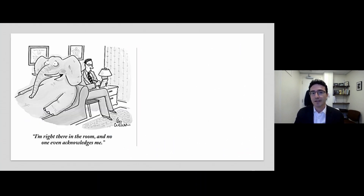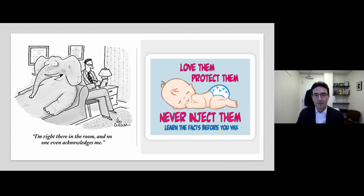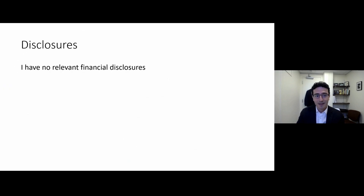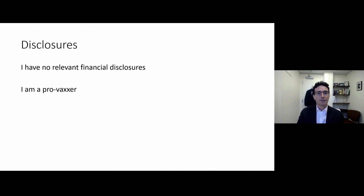Before diving into specific vaccines, I think it's important to name the elephant in the room. I love this cartoon — it's an elephant lying on a therapist's couch saying, 'Hey, I'm right here. No one's acknowledging me.' And I think that elephant for us is that not everyone believes that widespread vaccination is the way to go. There's a public service announcement from a small but vocal anti-vaccine group that says, 'Love them, protect them, never inject them, learn the facts before you vax.' I am definitively pro-vaccination, and I think it's important to talk about vaccine refusal and vaccine hesitancy as we set the stage for this talk.